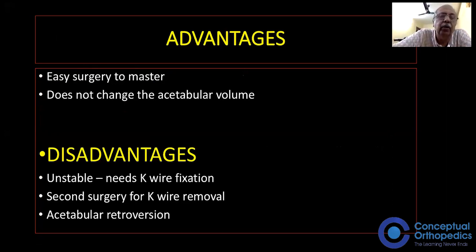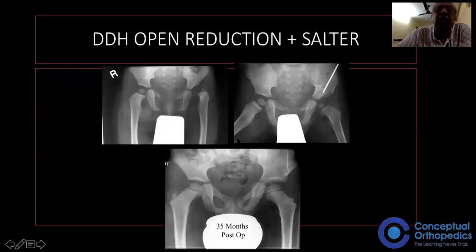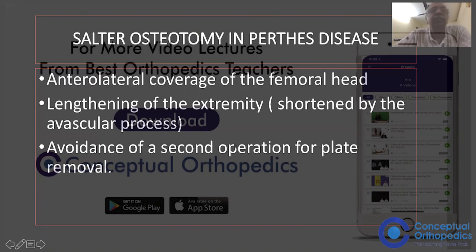Advantages: it is easy to master and does not change the volume of the acetabulum. Disadvantages: it is unstable because fixation is only by two K-wires, requiring another surgery to remove them, and there is the much-talked-about acetabular retroversion. This is one case of DDH with acetabular dysplasia in a two-year-old child — open reduction and Salter osteotomy have been done, and you can see how well the acetabulum has remodeled.